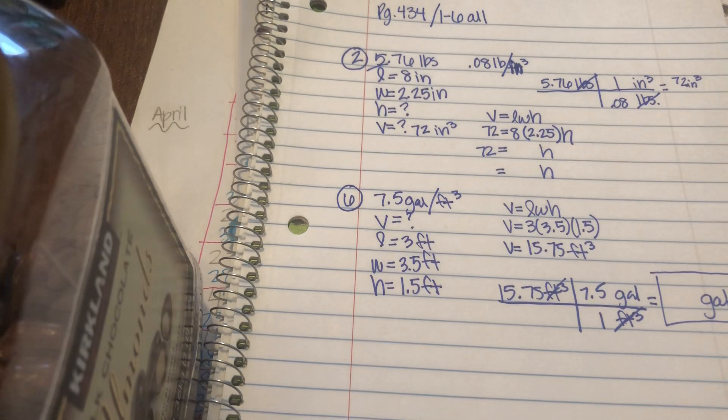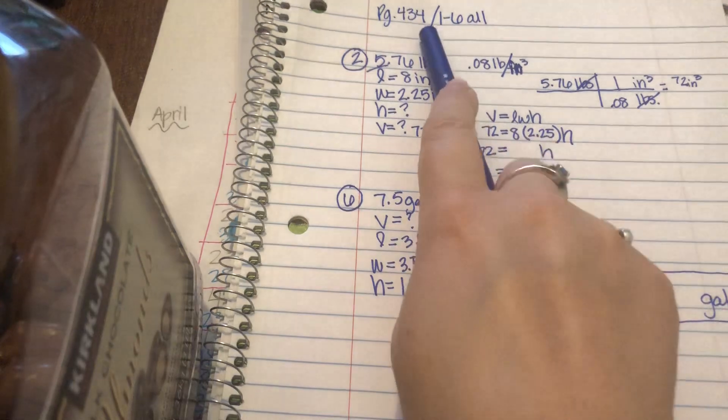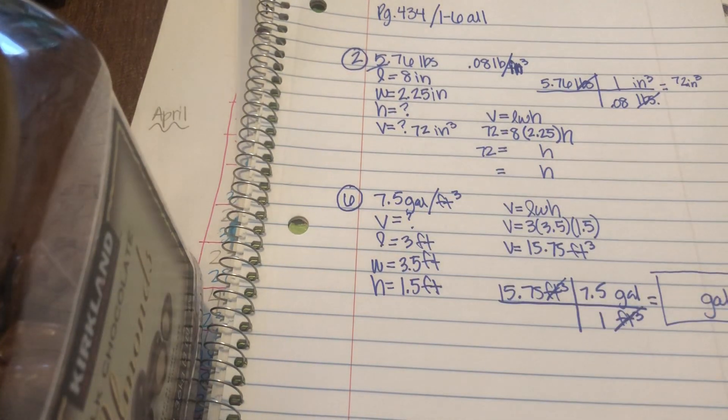All right. So I got you started on two and six. Notice I didn't finish them. You need to finish them. But hopefully that was enough to kind of get you going. And then I think those were the hardest of the page 434, one through six. So then you guys can hopefully use that to help you finish the rest. All right, you're going to do great. Nice, you guys.